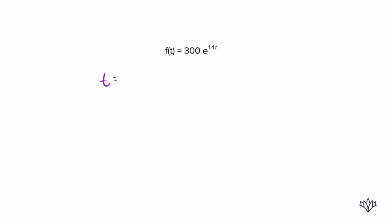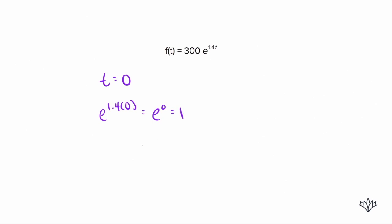Let's put in time as zero. So if time is zero, we're going to have e to the 1.4 times zero. So that's e to the zero. And e to the zero is always just one. So what do we have now? 300 times one. So when time is zero, what is our result? Our result is 300. What does that mean?